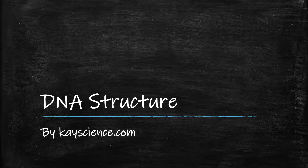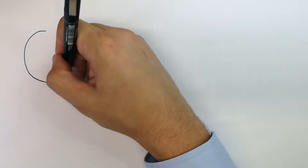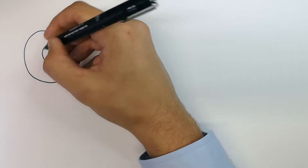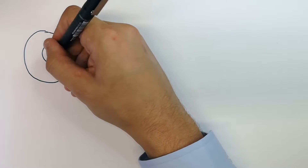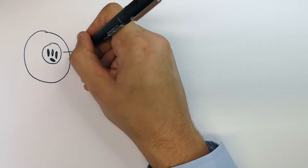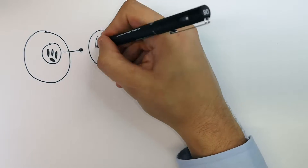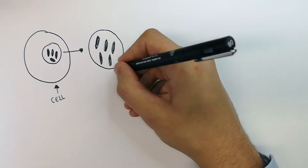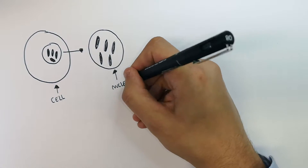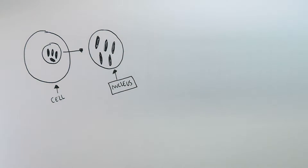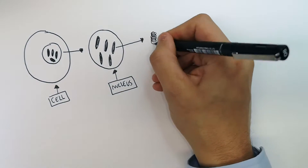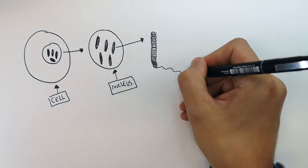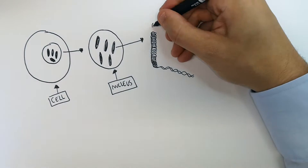The structure of DNA by kscience.com. Here I'm drawing the cell, and inside the cell is the nucleus. The nucleus contains chromosomes.